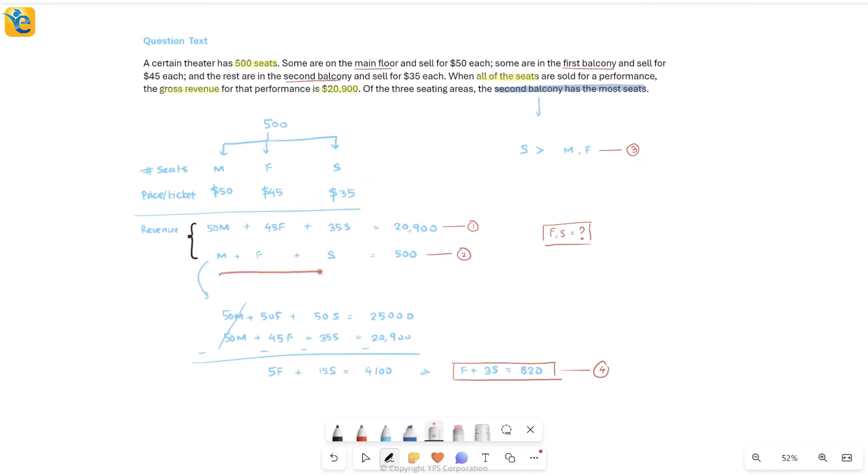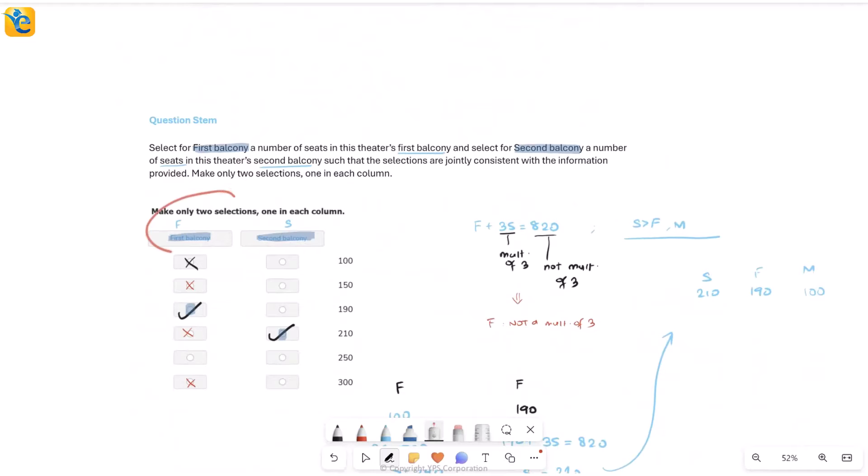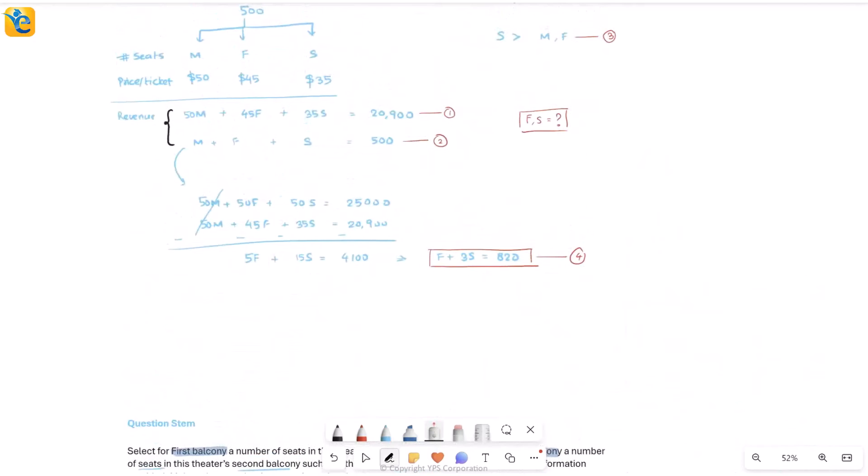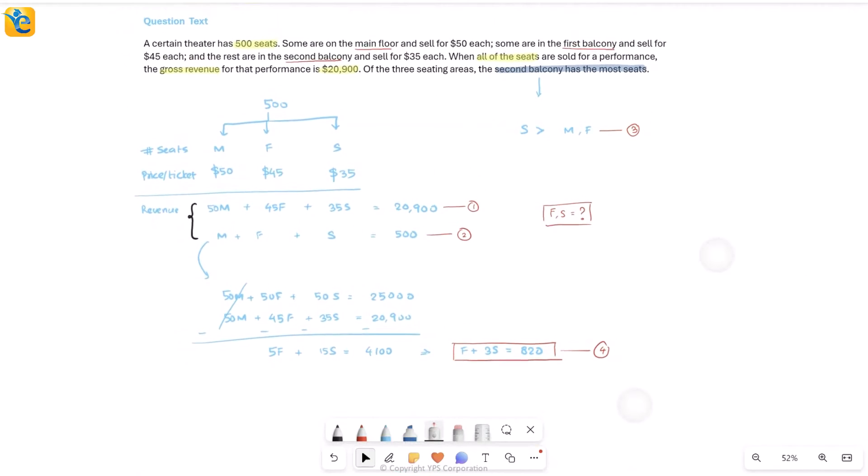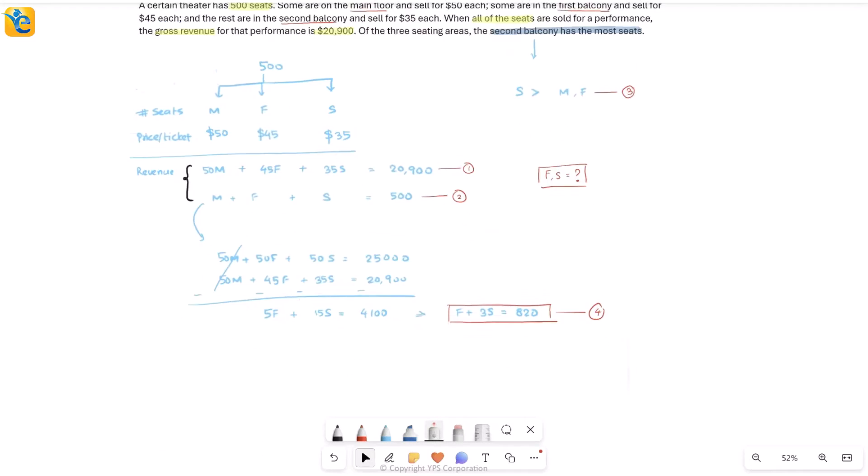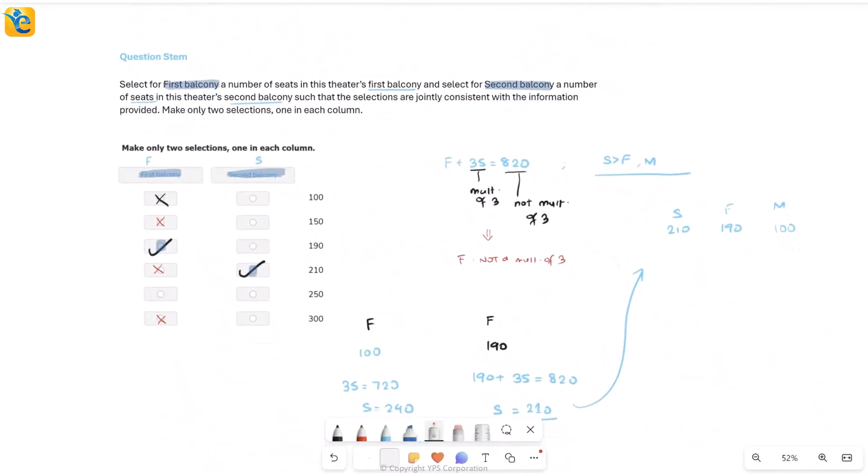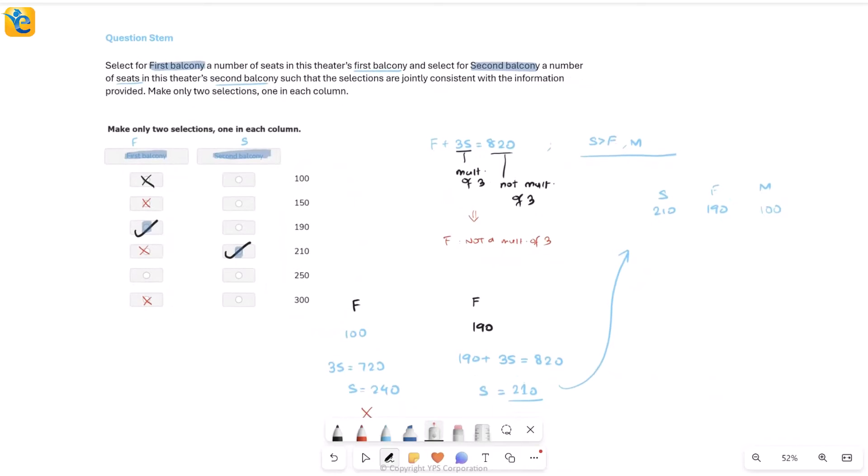That's how we got the sum of all three types of seats to be 500, and we wrote down the revenue by multiplying price per seat by number of seats. This system was three unknowns and two equations, so we would not have a unique answer. When we saw that the question wanted f and s, we understood we needed some relationship between these two. We had to eliminate m somehow, for which we manipulated the second equation. Simplifying gave us a relationship between f and 3s.